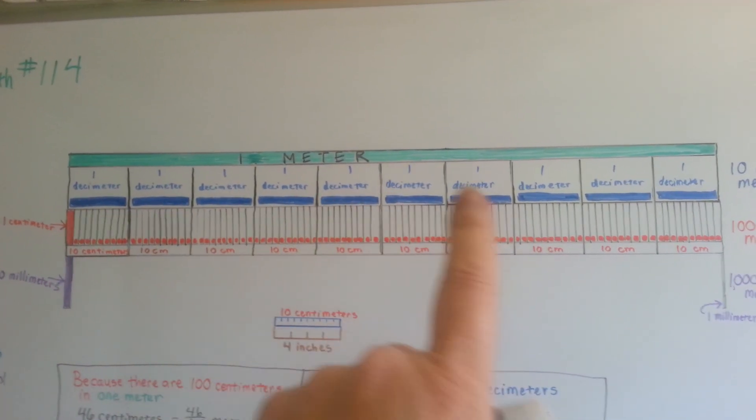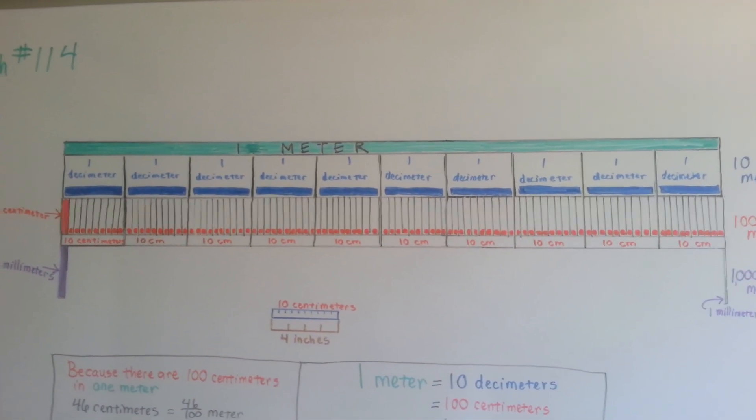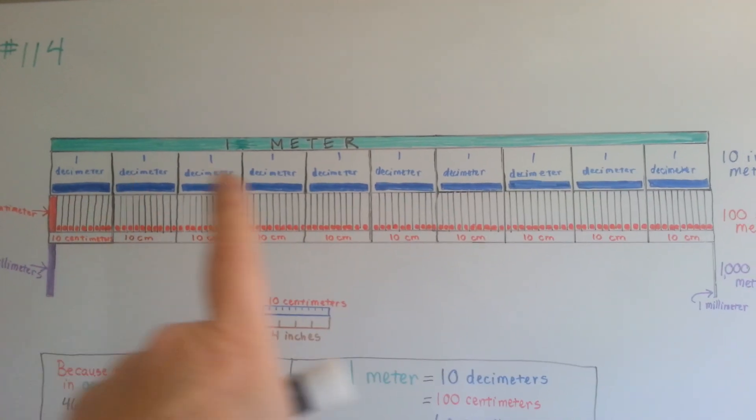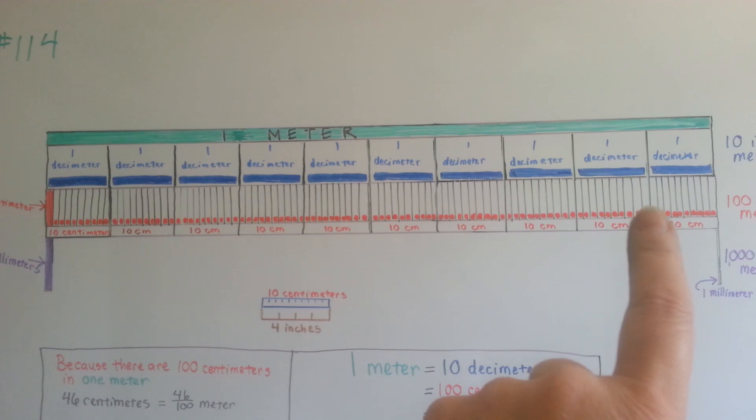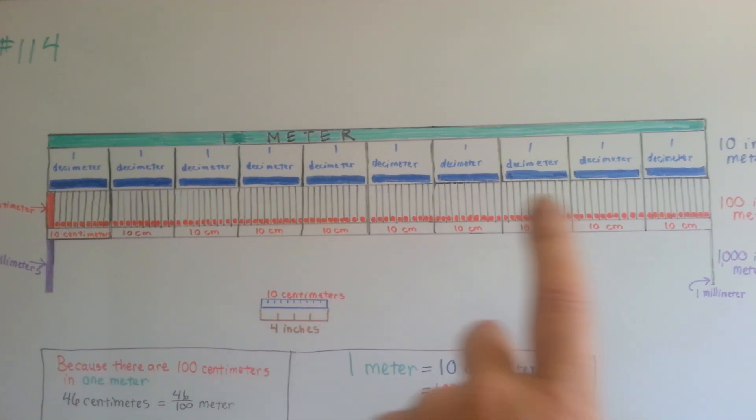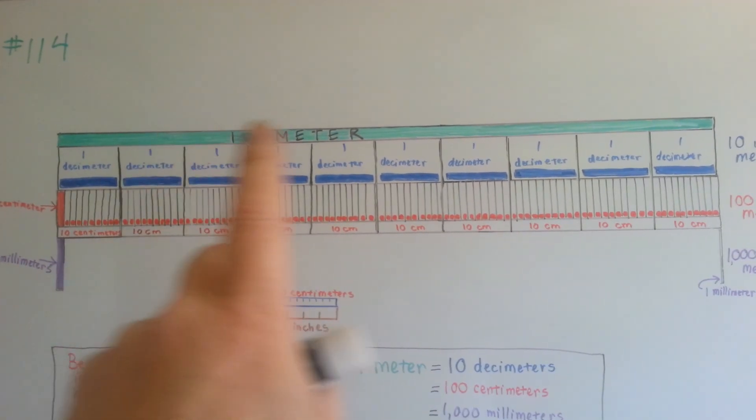there are ten blue parts here. Those are decimeters. There are ten decimeters to each meter. The red ones are centimeters. There's 100 centimeters in each meter.